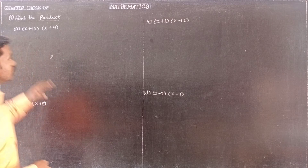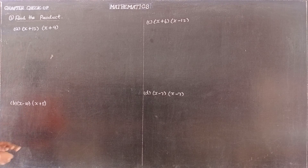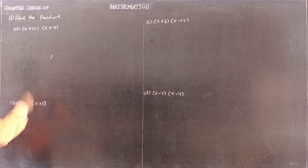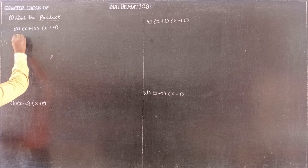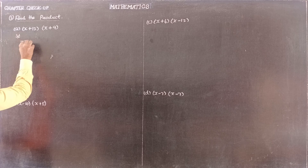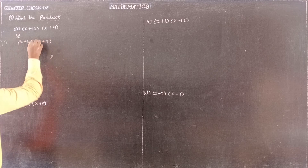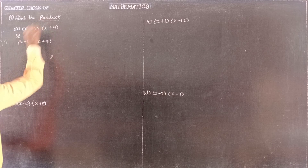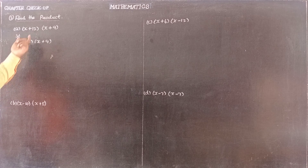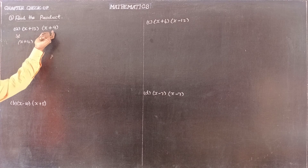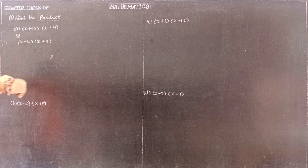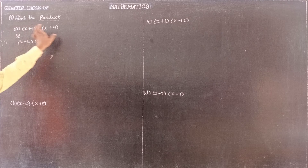How to check question number 2: Find the product. Subdivision A — multiply the two expressions x plus 12 and x plus 9.